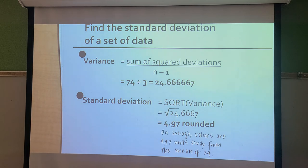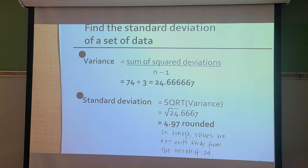We're not done yet — we still need to take the square root. Taking the square root of 24.6667 gives approximately 4.97. That means on average, these four data values tend to be about 4.97 units away from the mean of 24. That's how the data varies — on average, the data values vary about 4.97 units away from the mean.